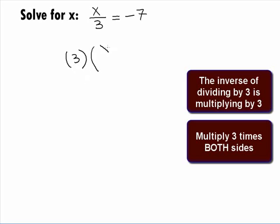Showing this on the left side, we have 3 times x over 3 equals and on the right side, 3 times negative 7.